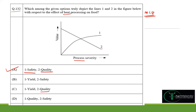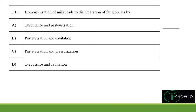Moving to question 133: homogenization of milk leads to disintegration of fat globules by turbulence or pasteurization. Pasteurization has no effect on the disintegration of fat globules in homogenization, so option A would be wrong.